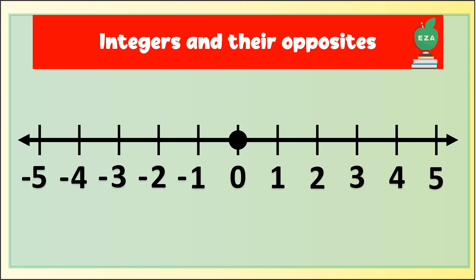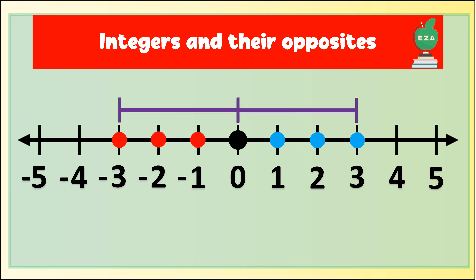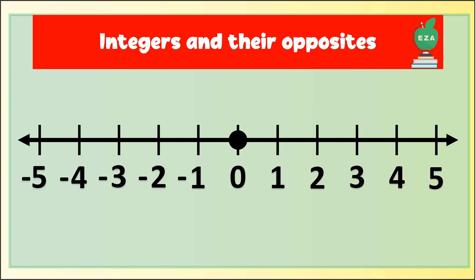Opposites are defined as two numbers that are on the opposite side of zero, but the same distance from zero. For example, if we were to count to positive three from zero, then count to negative three from zero. Both three and negative three would be considered opposites because they are on opposite sides of zero and the same distance from zero. Zero is considered its own opposite.